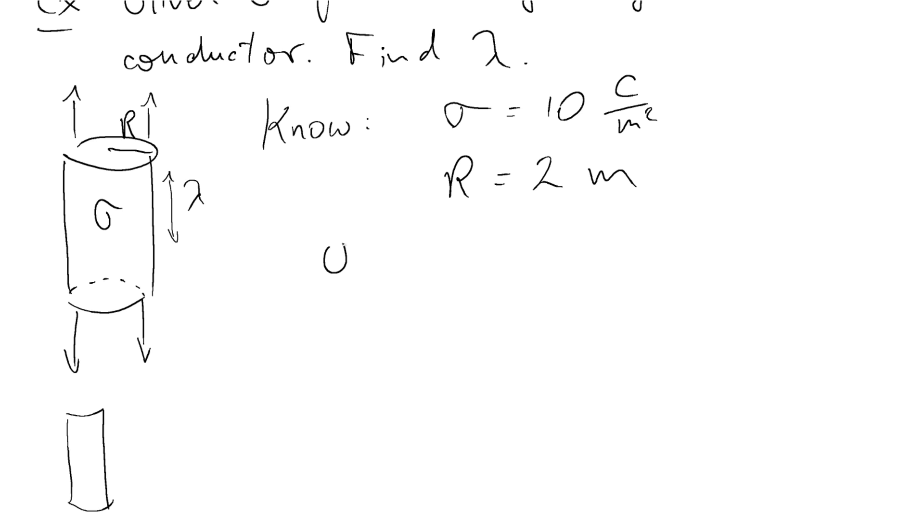Now let's rewrite that really quickly. Here we have sigma A is equal to lambda L and we're looking for lambda so we can rearrange the equation by dividing by the length. Lambda is equal to sigma A divided by the length. Now we just have to figure out what area and what length are we actually talking about.